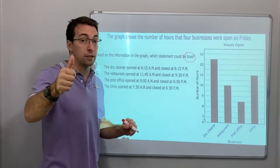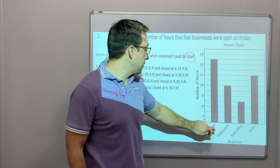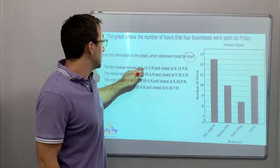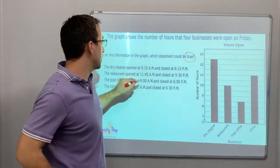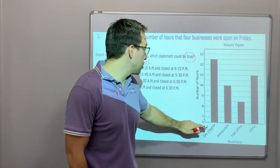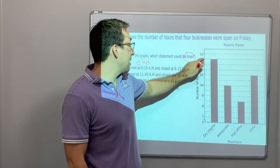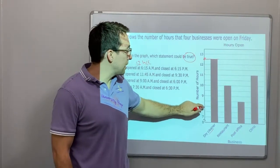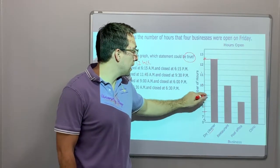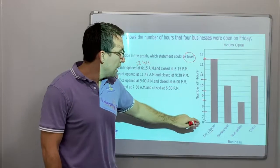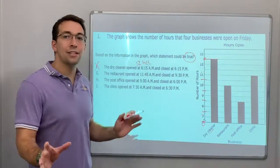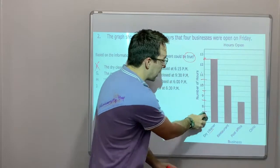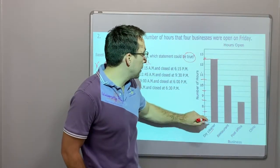The dry cleaner opened at 6:15 a.m. and closed at 6:15 p.m. — that's 12 hours. But the dry cleaner was open 12 and a half hours on the graph, so that is wrong. Notice the pattern: 7, 8, 9, 10, 11, 12 — and there's a squiggly line here. If a chart has a squiggly, it means the pattern was broken, jumping from 0 to 7 to help focus on just those hours.